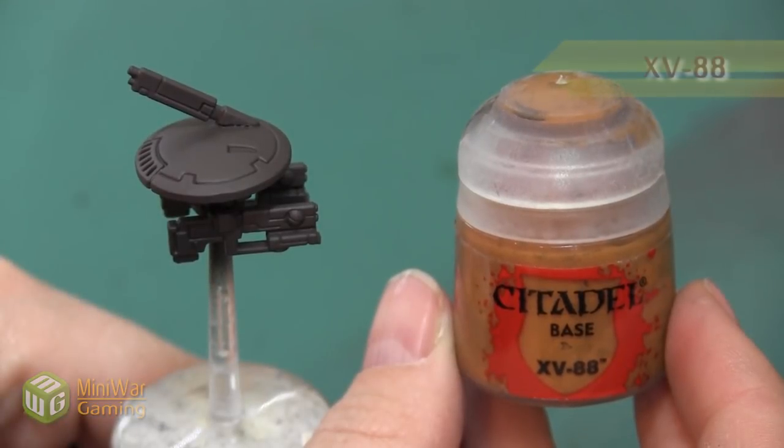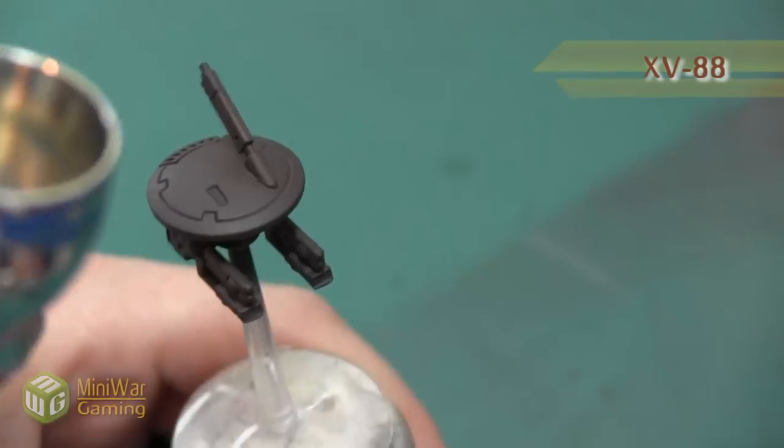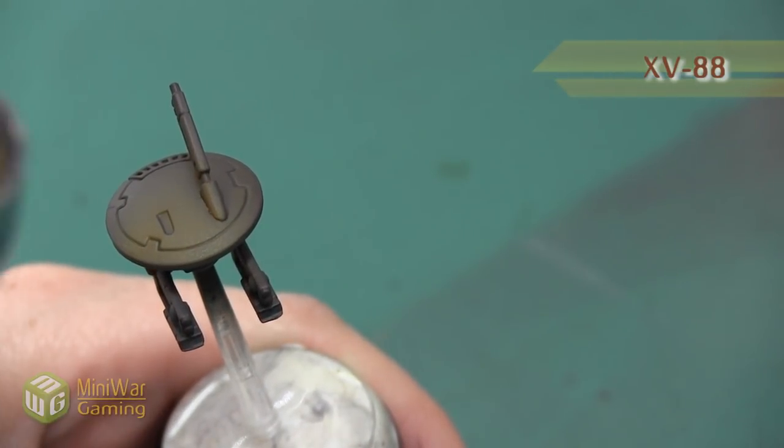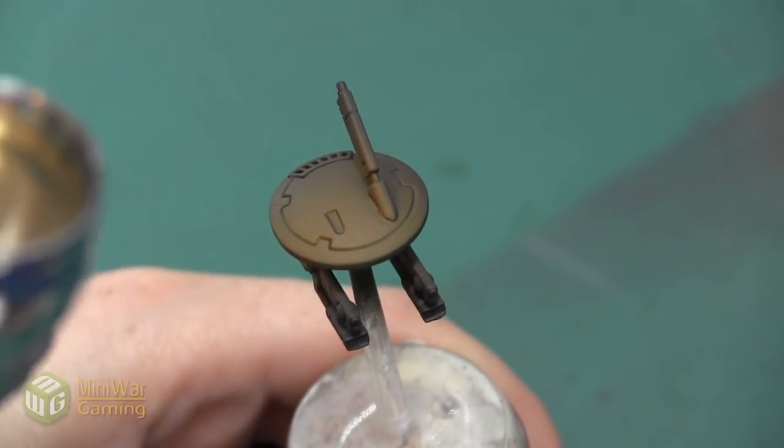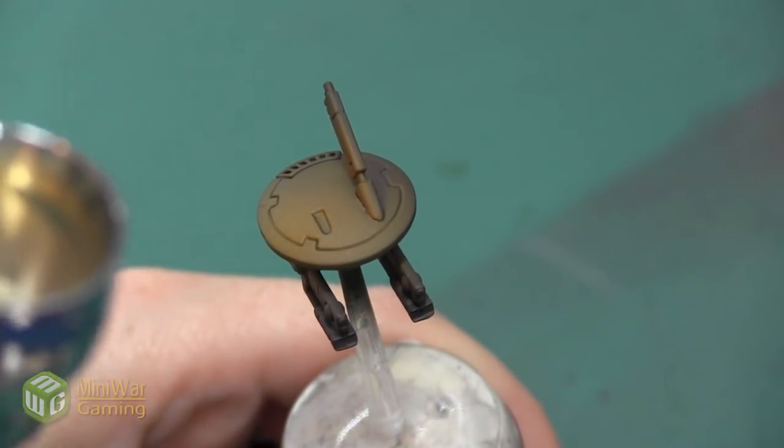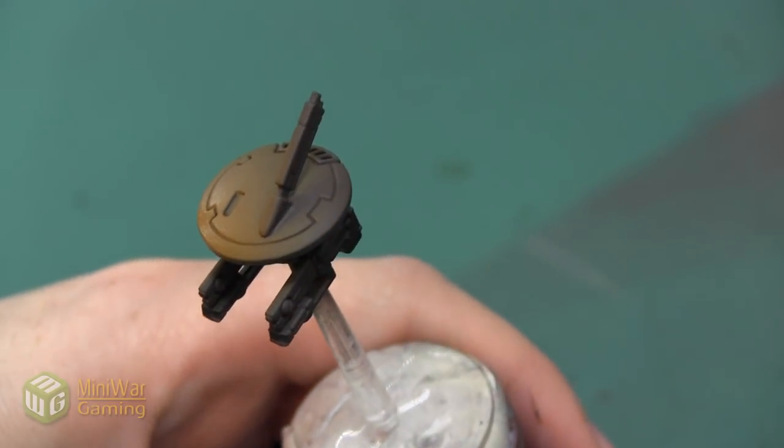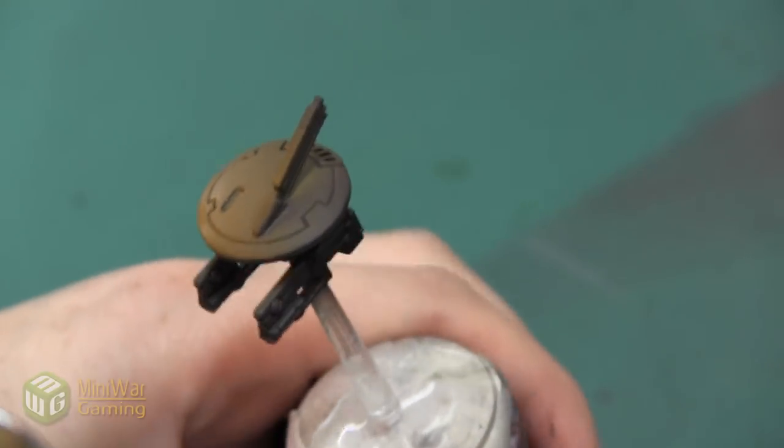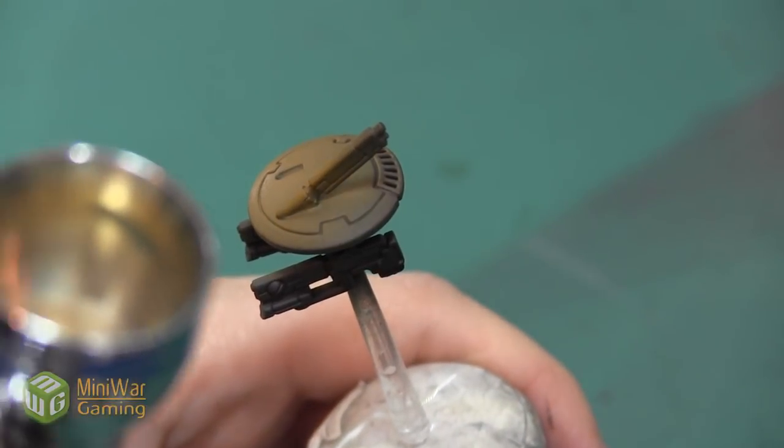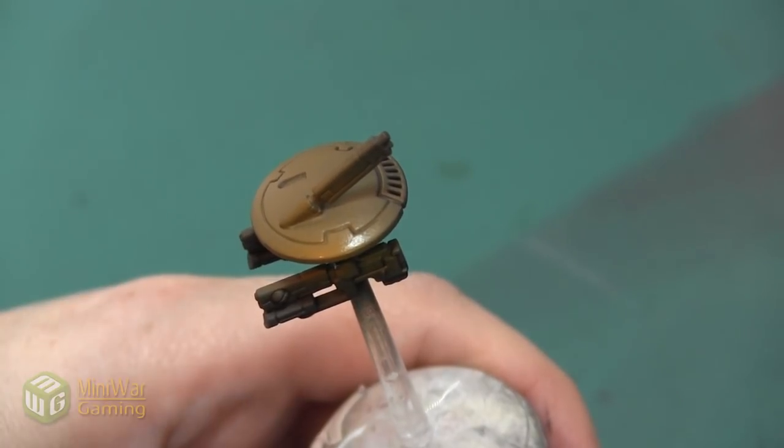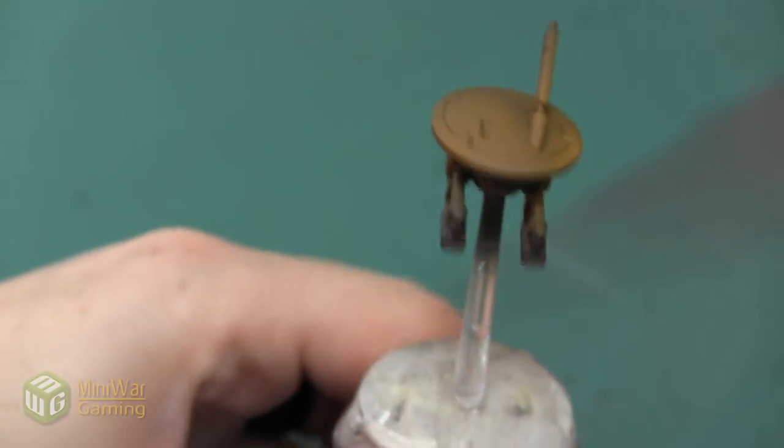Now the next layer is going to be XV-88. I'm mixing this color in the same way I did with the Dryad Bark, and as I apply it I'm going to cover most of the top area of the Tau drone. I'm going to let the bottom layer continue to be mostly that Dryad Bark color, and I'm going to try to apply this color more heavily towards the front of the drone so that the back slowly fades and remains a little bit darker.